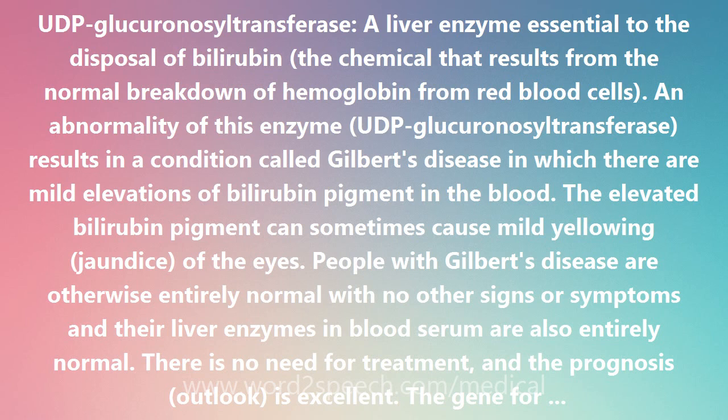If someone has Gilbert's disease, the chance of their transmitting the Gilbert gene to each of their children is one-half, and each child who gets the gene gets Gilbert's disease.